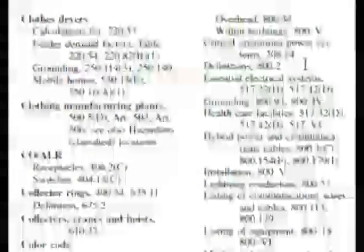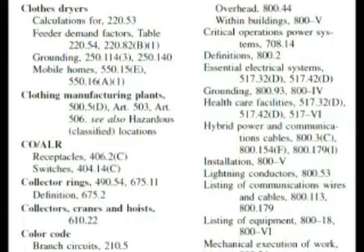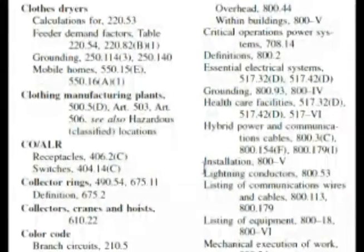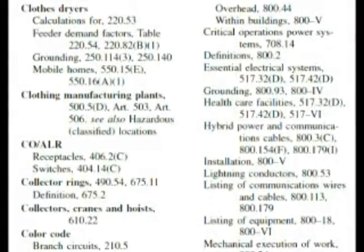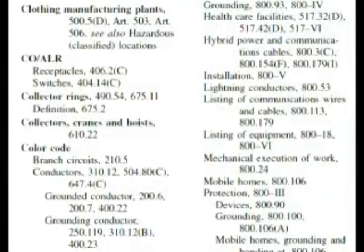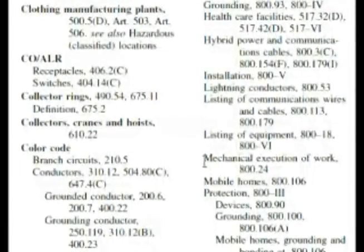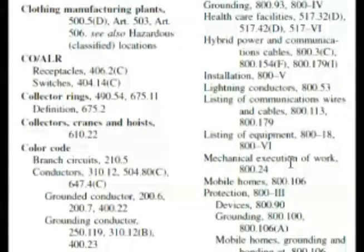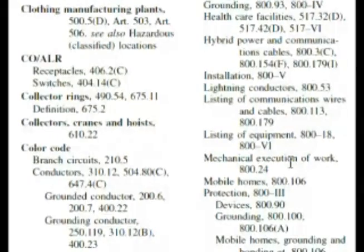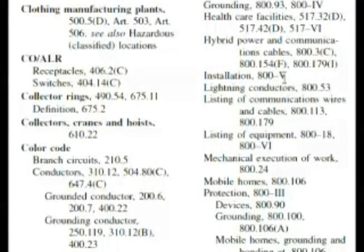As we're looking here and coming down, we're not really seeing something that's going to help us. I was hoping to find something like 'installed.' Well, it has installation 800 and Roman numeral V. Let's go a little bit further down here. It has mechanical execution of work. Now, this would deal with everything on how to put it all together, and it seems like a strange way to say it. We have 800.24 and we have installation 800 and Roman numeral V. So let's check those out.